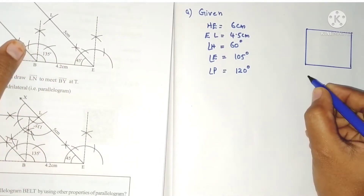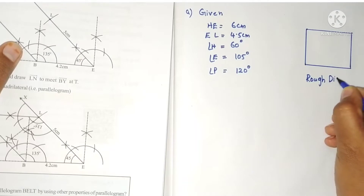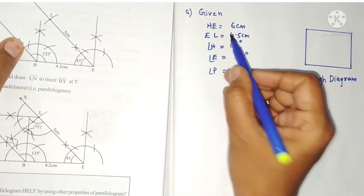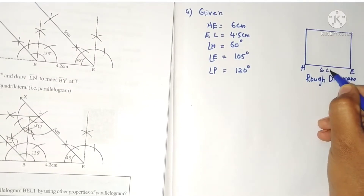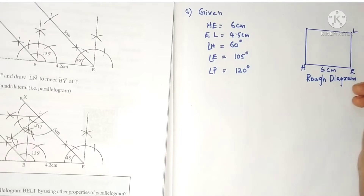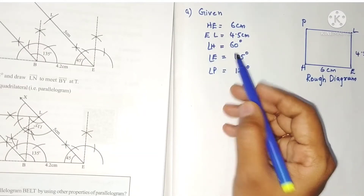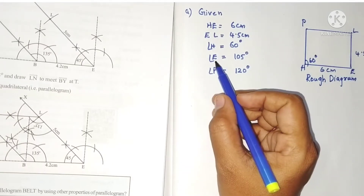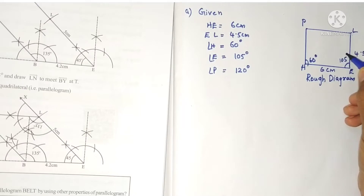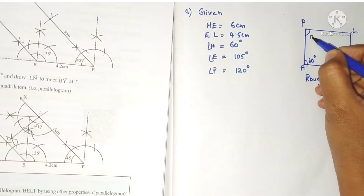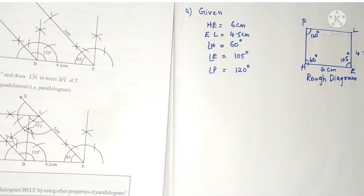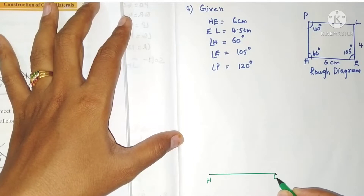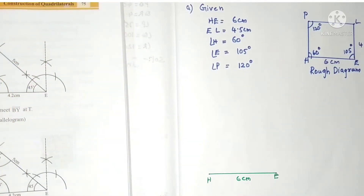One quadrilateral is drawn. The first measurement is HE = 6 centimeters, next EL = 4.5 centimeters, angle H = 60 degrees, angle E = 105 degrees, and angle P = 120 degrees. With these measurements we have to construct a quadrilateral. For that, a line segment HE of length 6 centimeters is drawn.